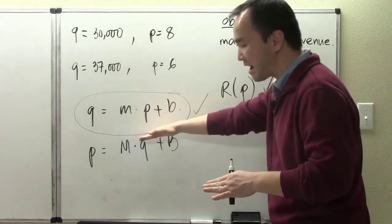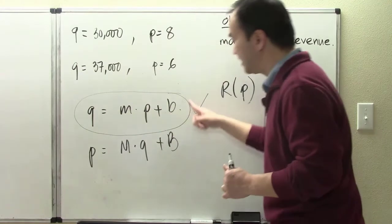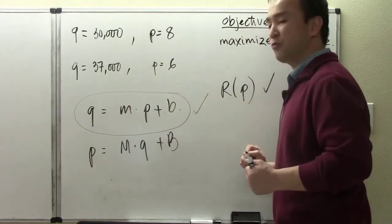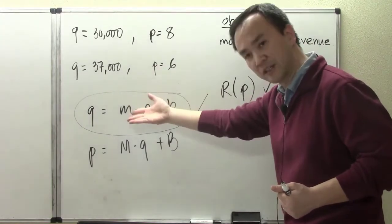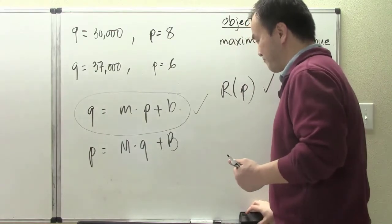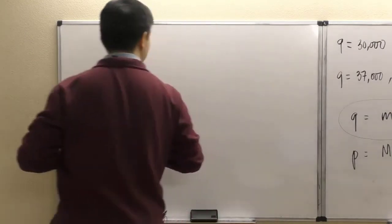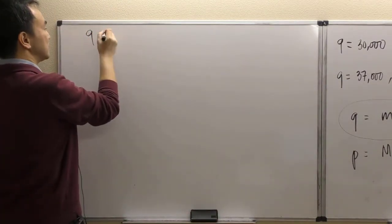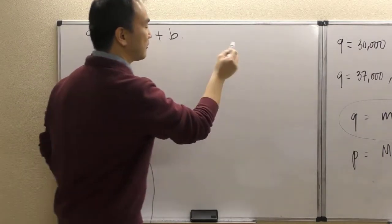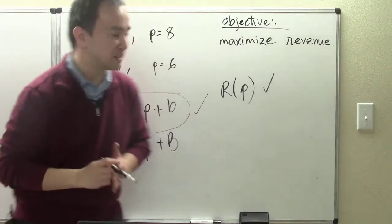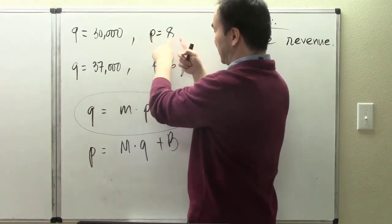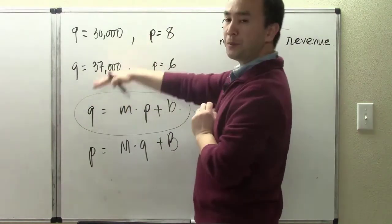We are going to express the demand equation as Q equals some slope multiplying the price plus some y-intercept, because we want price to be the determining factor that changes the attendance and also the revenue. With our two pairs of values — Q = 30,000 at P = 8, and Q = 37,000 at P = 6 — we put P first and then Q as an ordered pair: (8, 30000) and (6, 37000).